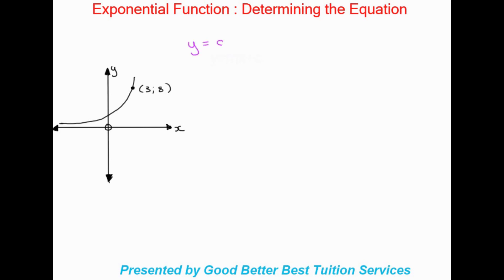The standard formula for exponential functions is y = a times b to the power of x plus q. The problem with this formula is that there are three unknowns: a, b, and q. When determining the equation from a graph, they will never give us situations with three unknowns — they'll always make it so there are two unknowns.